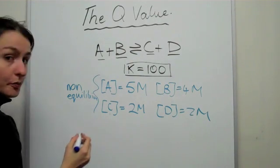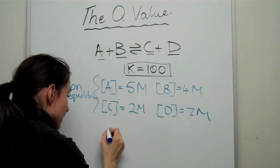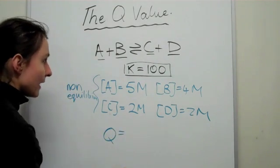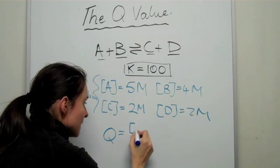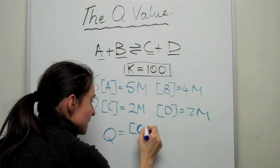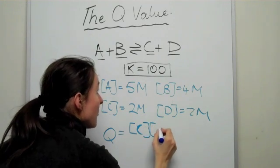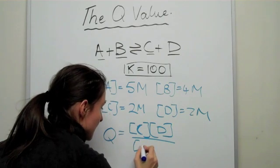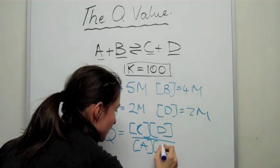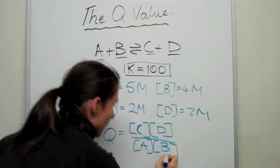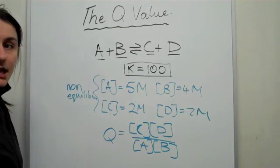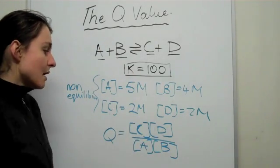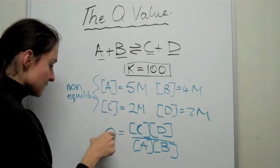So what we're going to do is we're going to write out the Q value is equal to still products divided by reactants just in the same way. So C times by D divided by A times by B. All right, so essentially, that is exactly the same way, if you remember back, that is the same way as we would calculate K. But the major thing is that this is non-equilibrium.